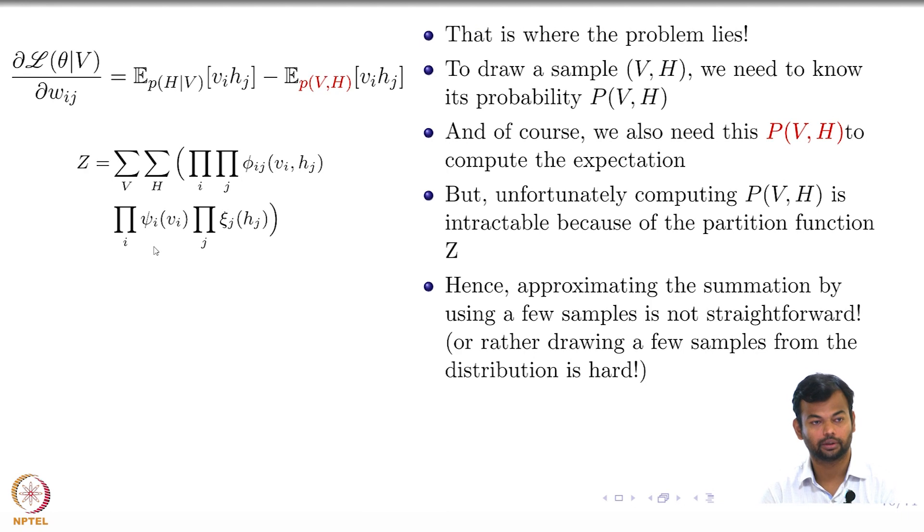We're talking about training RBMs and in particular we were interested in the gradient of the log likelihood with respect to a parameter. We saw that this is actually a sum of two expectations and it's hard to compute these expectations because you have a summation over an exponential number of terms.